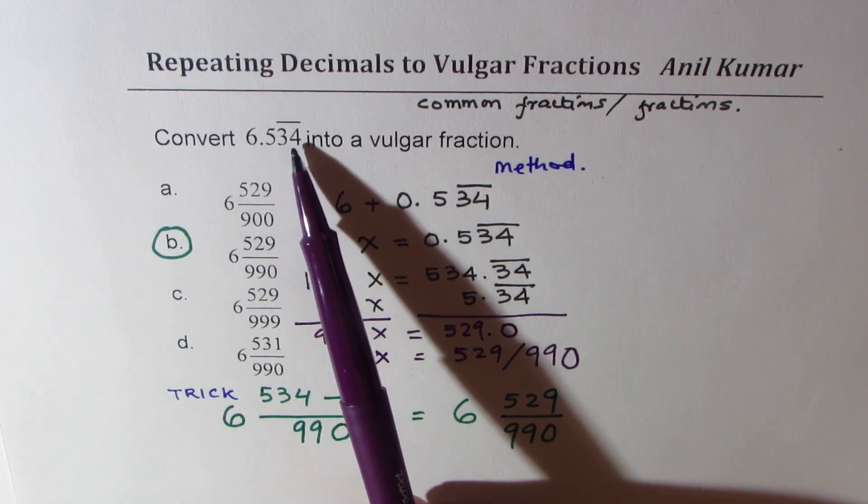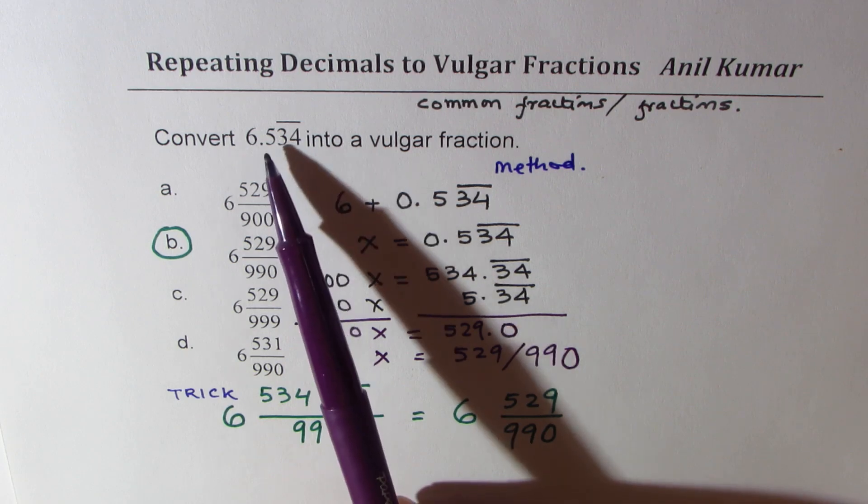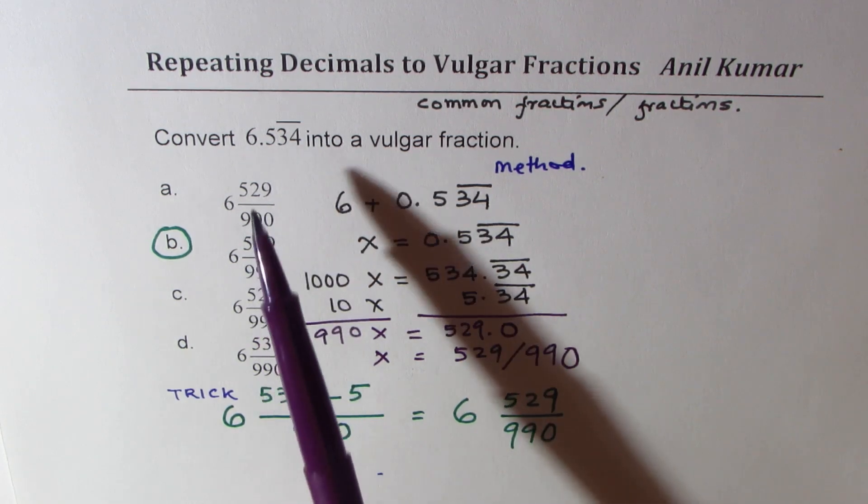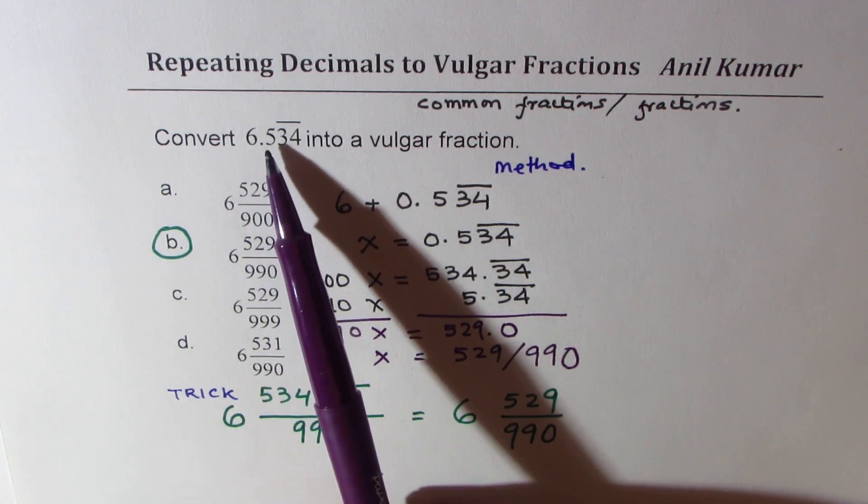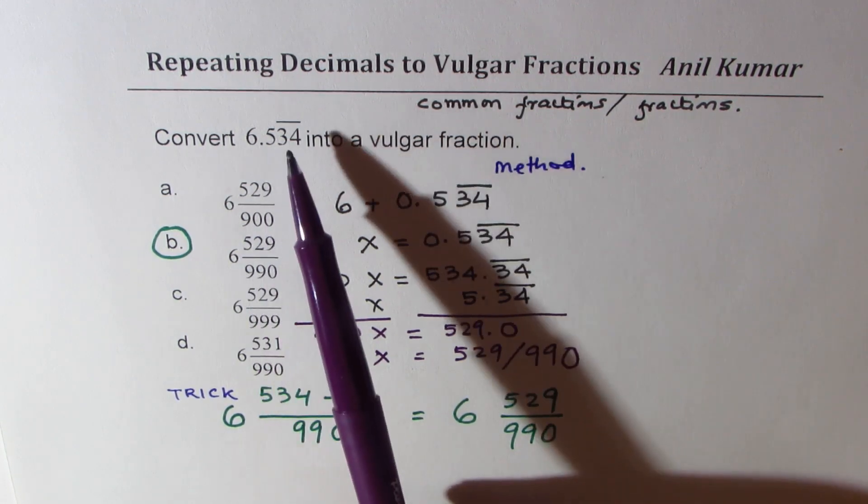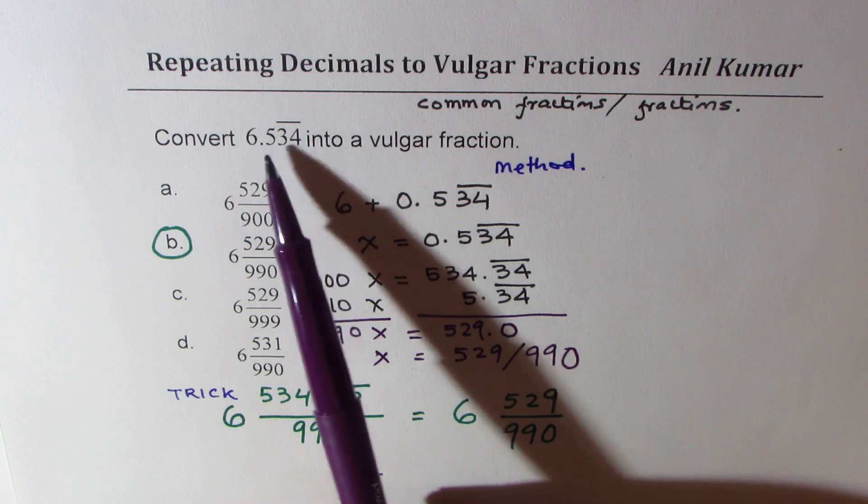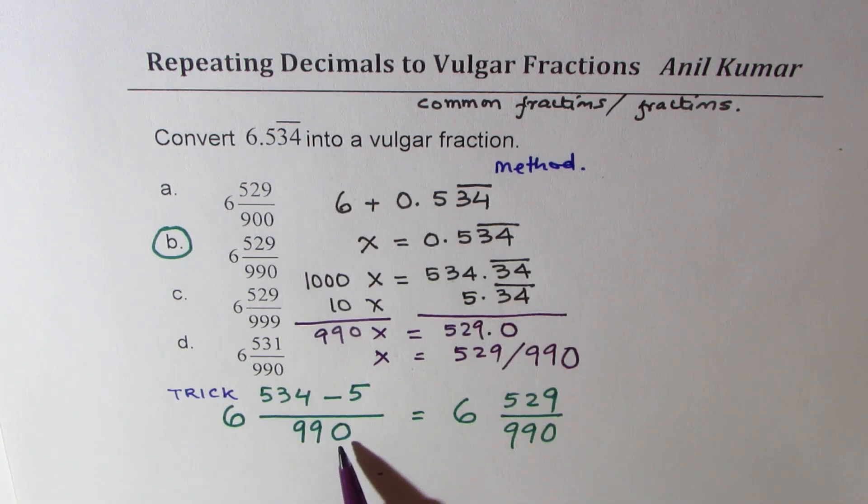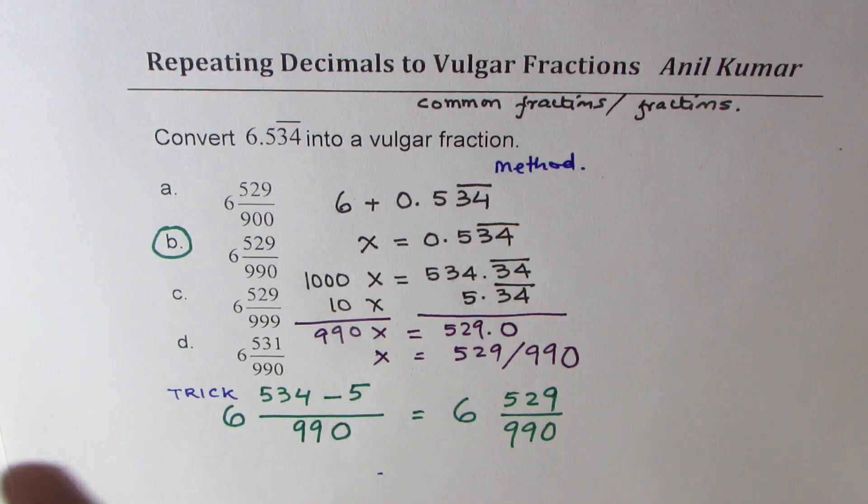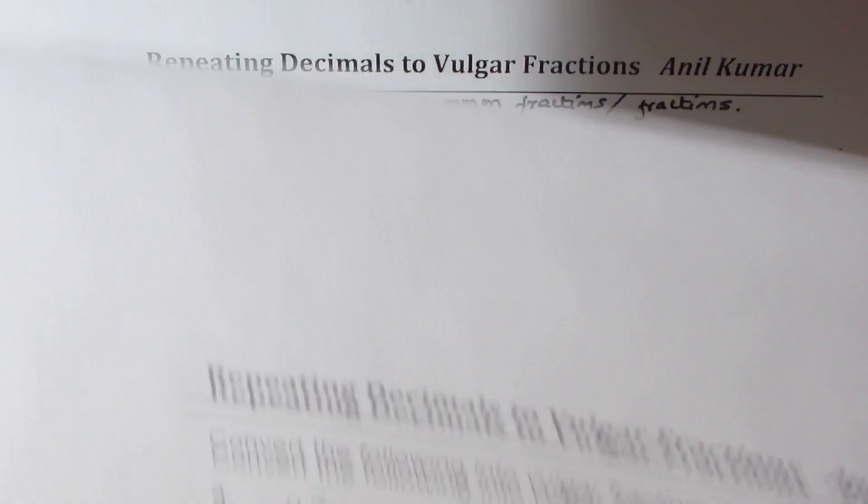So 534 minus what is not repeating which is 5, divided by number of digits repeating are replaced by 9s and all other digits are replaced by 0. We get 990 and that is how we immediately get our answer. I hope the method is well understood.